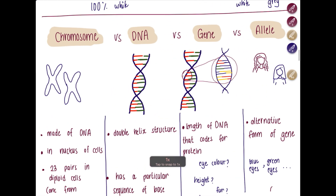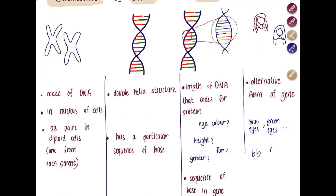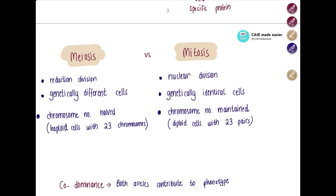An allele is basically an alternative form of a gene. The gene for eye color could be different for different people — it could be blue or green. Some people are homozygous, meaning they got the same allele for eye color from both parents. Some are heterozygous, inheriting different alleles from each parent. So capital B and small b are both alleles for eye color.